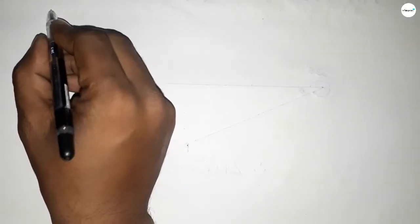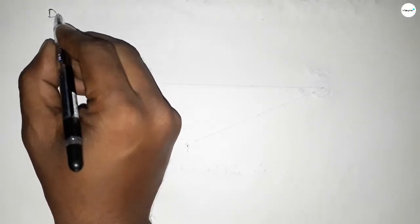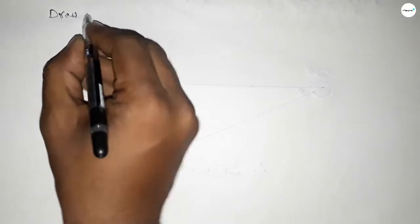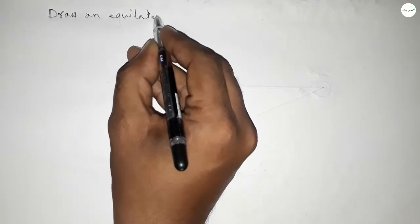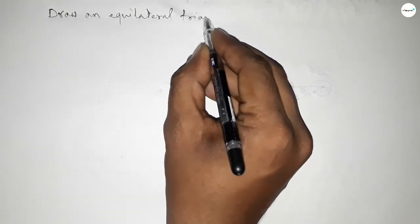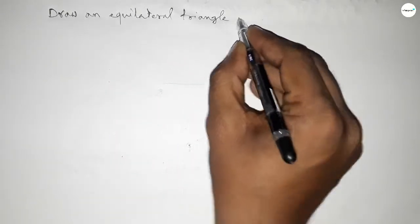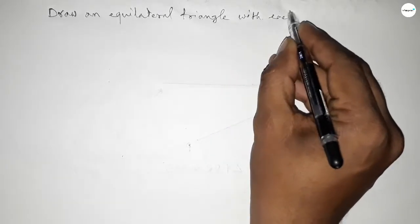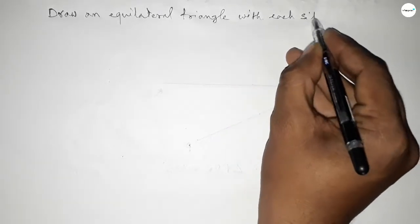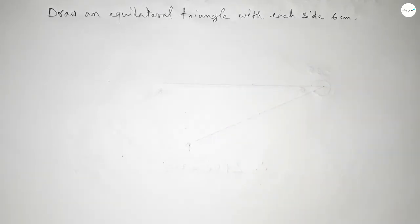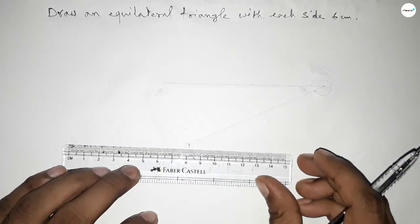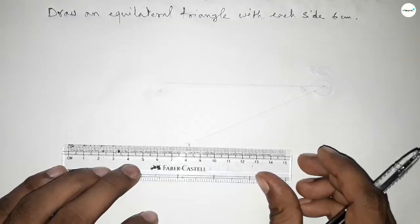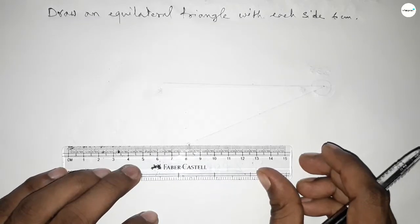Hi everyone, welcome to SSR Classes. Today in this video we have to draw an equilateral triangle with each side 6 centimeters. So let's start the video.